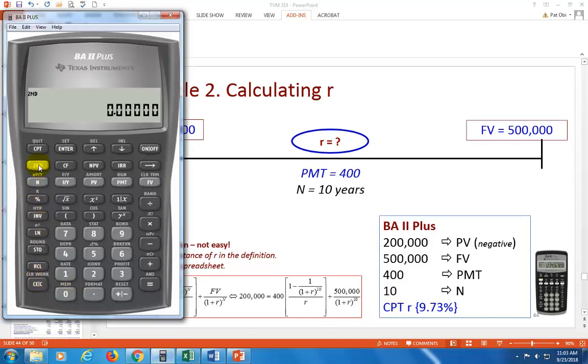Clear the screen. Second, clear TVM. Second, clear work. Again, you do this ritual to clean out the system of what you did previously. So this is going to be $200,000 with a negative is PV. Half a million as your future value, $400, that's your annuity payment. And 10, that's your N. And then you compute the required rate of return to be 9.73%.